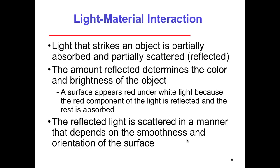There exist many techniques for approximating global effects — this is where a lot of ray tracing algorithms and modern-day research improvements are focused. When light hits material, we have an interaction: the light is partially absorbed or partially scattered and reflected. Scattering means the light bounces and projects onto multiple different objects. The amount reflected determines the color and brightness of the objects. A surface appears red under white light because the red component is reflected and the rest is absorbed. The reflected light is scattered in a manner that depends on the smoothness and orientation of the surface.